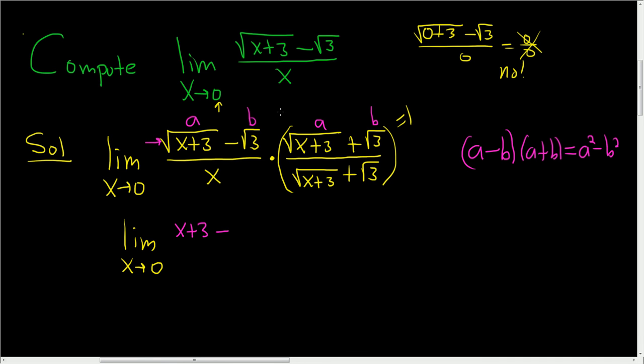And in the denominator, we still have our x, and it's really easy to forget this piece as well. This is being multiplied by the denominator. So we have parentheses, square root x plus 3, plus the square root of 3.